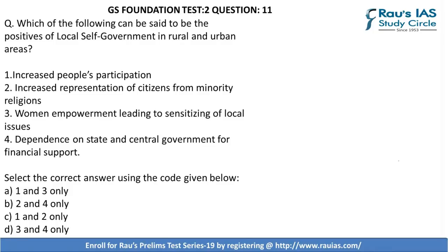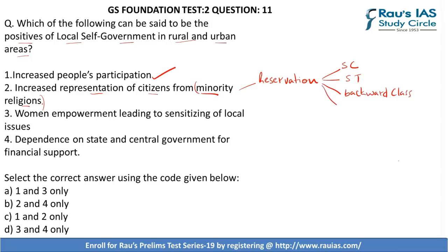Question 11 asks which of the following can be considered positives of local self-government in rural and urban areas. The first — increased people's participation — is correct, as local self-government has provided even people in villages an opportunity to be part of the election process. Second — increased representation of citizens from minority religions. Be very careful: the statement says minority religions. Under the Local Self-Government Act, reservation is provided to Scheduled Castes, Scheduled Tribes, backward classes, and women.